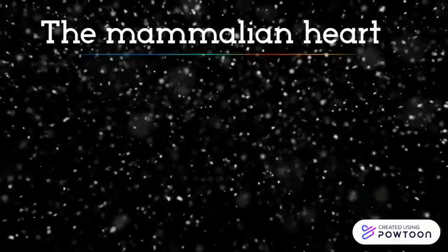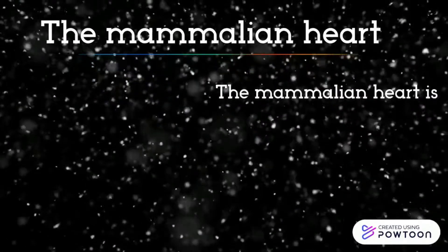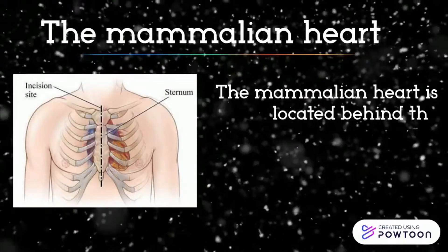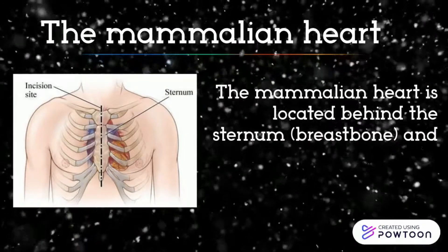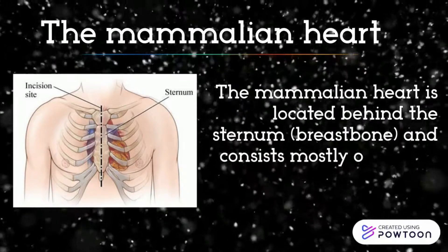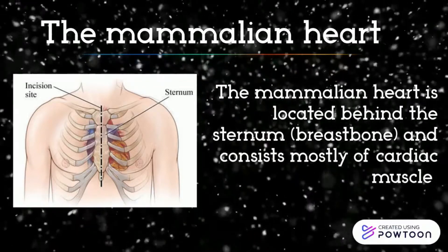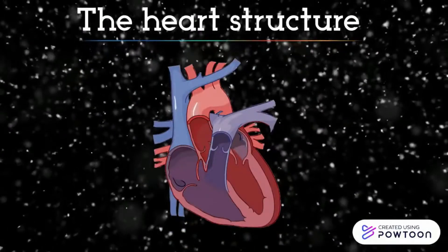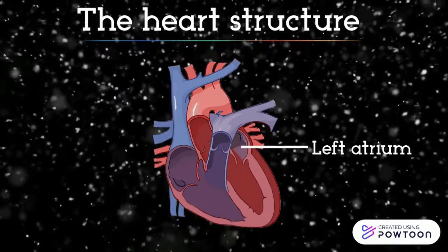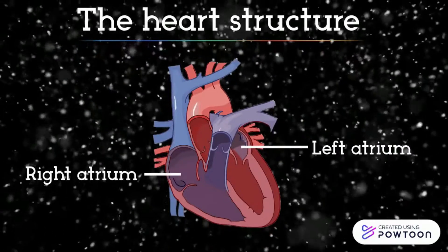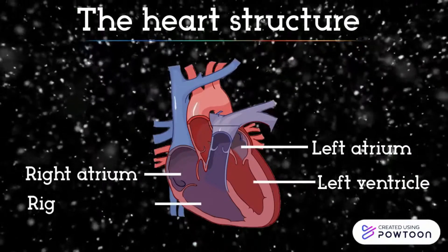The Mammalian Heart is located behind the sternum, or breastbone, and consists mostly of cardiac muscle. The heart is divided into the left atrium, right atrium, left ventricle, and right ventricle.